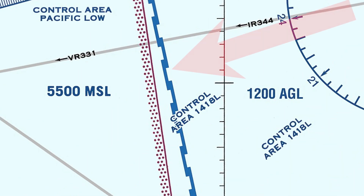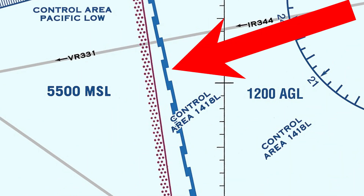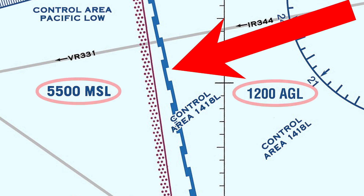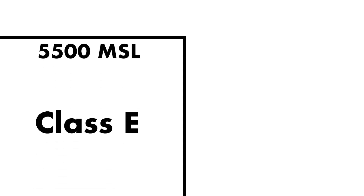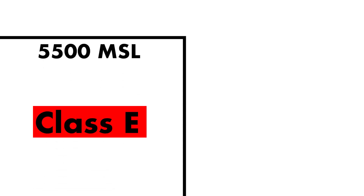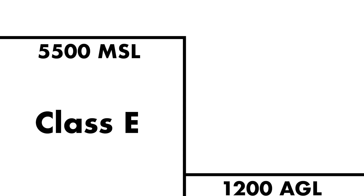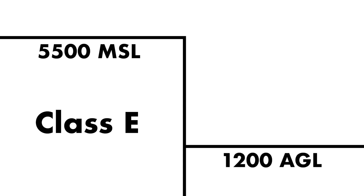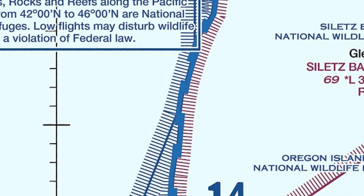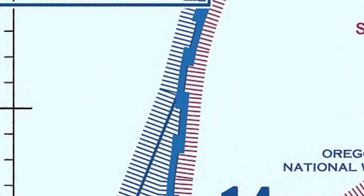Next up, we have these blue lines. They differentiate areas with different floors of Class E airspace. For example, on this one, we have 5,500 feet as the floor of Class Echo airspace on the west side and 1,200 feet on the east side. These are often found offshore and in the ocean.